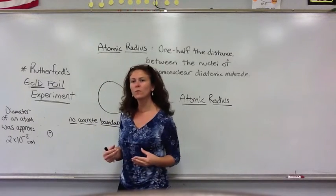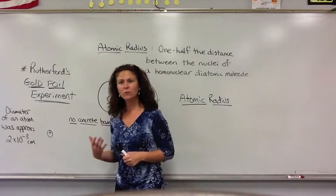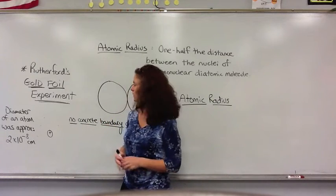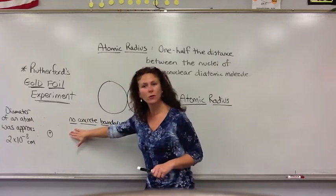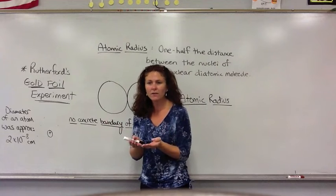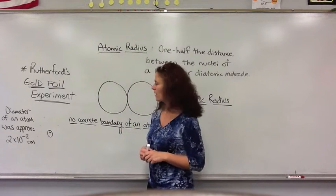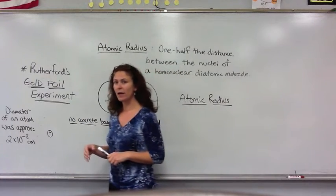The problem with measuring the size of an atom is that later on as we developed into the quantum mechanical model, we know that there's absolutely no concrete boundary of an atom. There's no distinct, defined outer edge of an atom, so we can really only approximate the true measurement of the size of the atom.